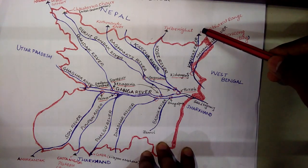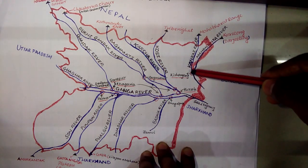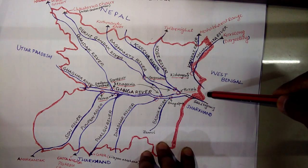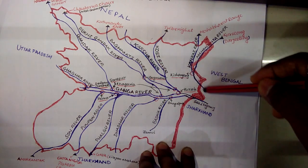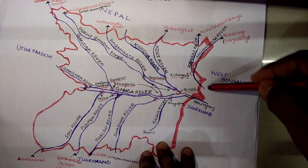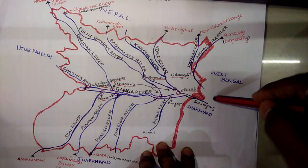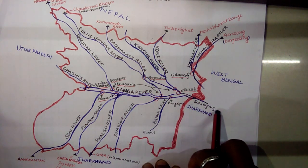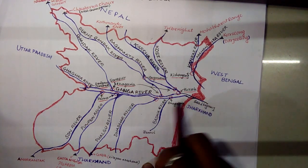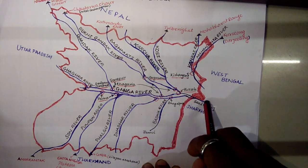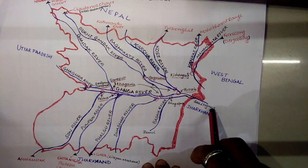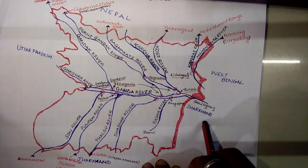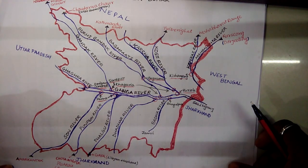Here we have the Mahananda river coming from Kuriya Song in Darjeeling. The Mahananda has one tributary — the Kankai river, coming from the Mahabharata range. These rivers confluence into the Ganga when they enter West Bengal, so they merge into the Ganga in West Bengal. Here you can see Sahibganj — this is the only district where the Ganga flows in Jharkhand.